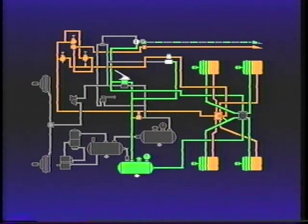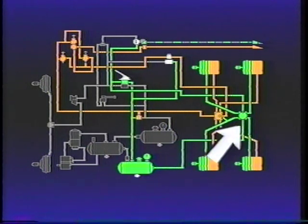A spring brake relay valve delivers or releases air to the spring brakes in response to control air received from the PP1 push-pull valve or other source. A different relay valve controls the service brakes.